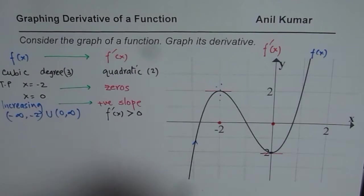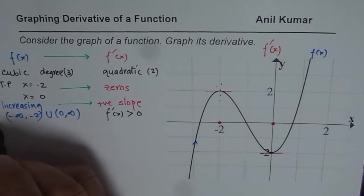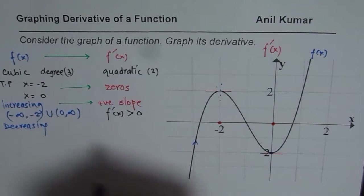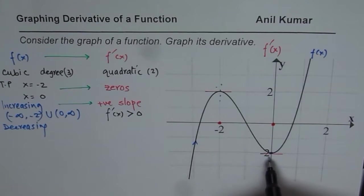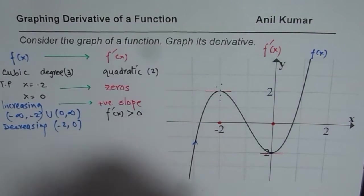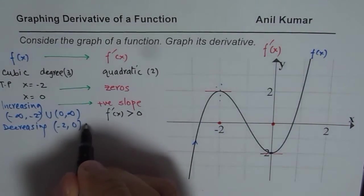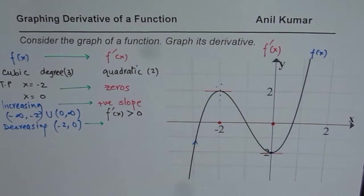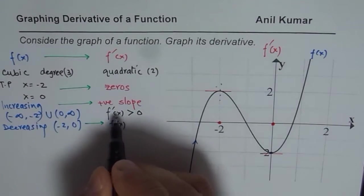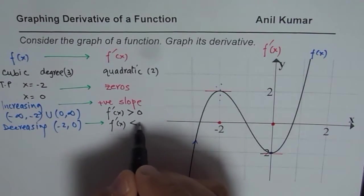Now, you should also consider the decreasing intervals. So decreasing intervals will be what? Between minus 2 and 0. So that is from minus 2 to 0. So during this decreasing interval, what do you expect? During decreasing interval, f dash x, or the derivative, f prime x, should be less than 0.